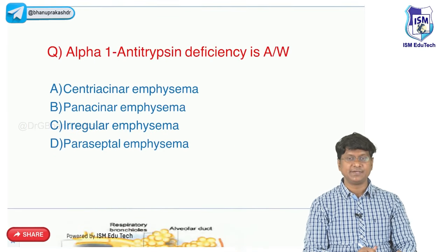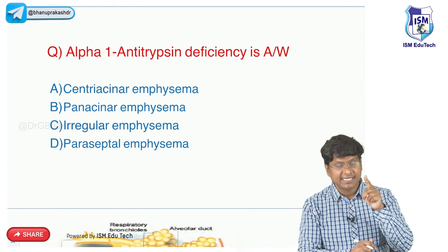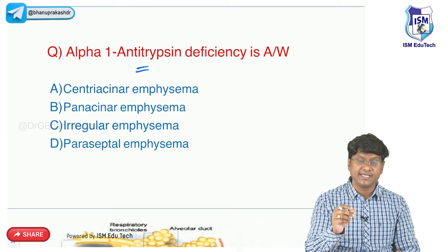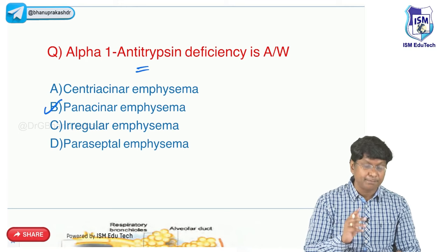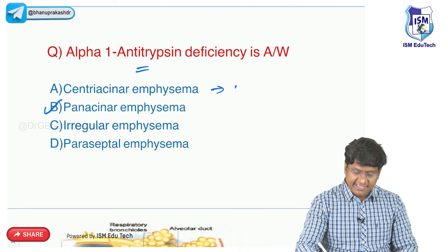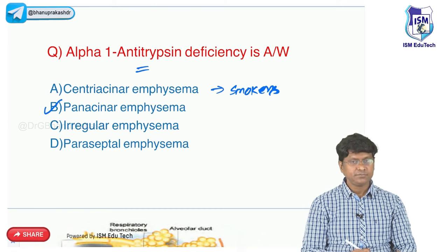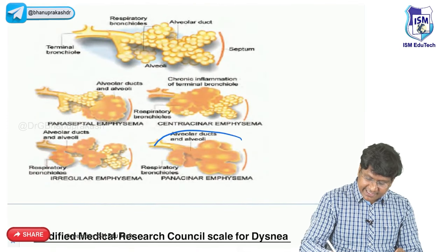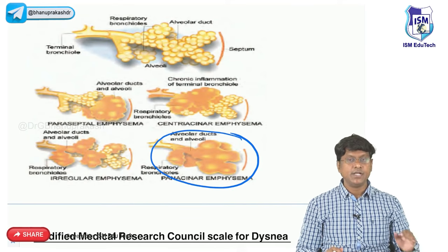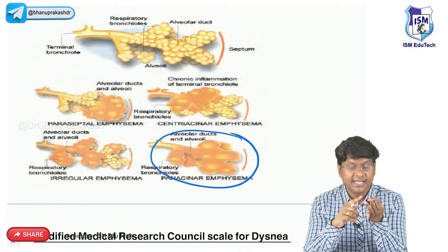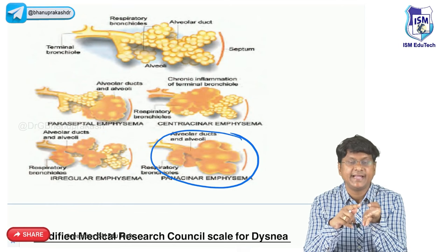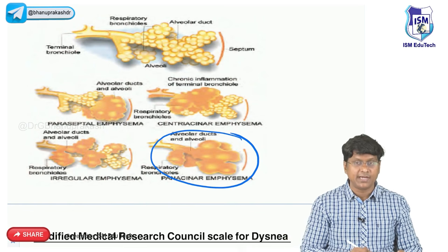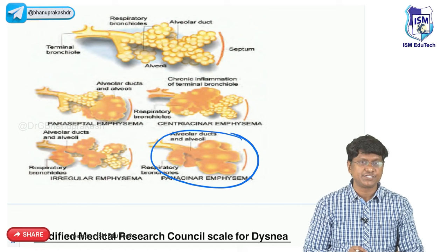In emphysema, apart from cigarette smoking, alpha-1 antitrypsin deficiency is an important cause. Alpha-1 antitrypsin deficiency is associated with panacinar emphysema, while centriacinar emphysema is commonly seen in smokers. In panacinar emphysema, the entire acinus - respiratory bronchioles, alveolar duct, alveolar sac, and alveoli - is abnormally irreversibly dilated, as seen in alpha-1 antitrypsin deficiency.